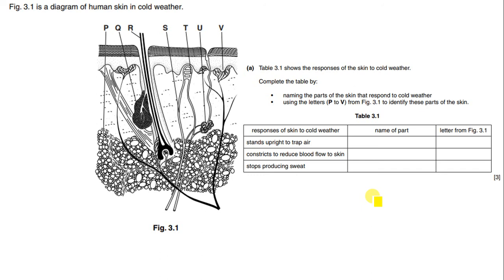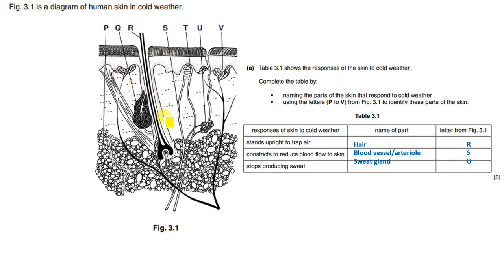Figure 3.1 is a diagram of human skin in cold weather. Table 3.1 shows the responses of the skin to cold weather. Name the parts of the skin that respond using letters P to V. Standing upright to trap air is the hair erector muscle, labeled R. Constricting to reduce blood flow to the skin is the blood vessels, labeled S. Stopping production of sweat is the sweat glands, labeled U.